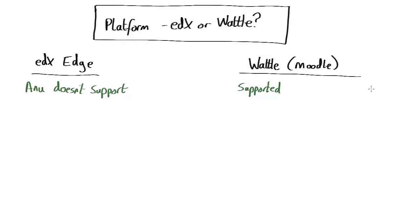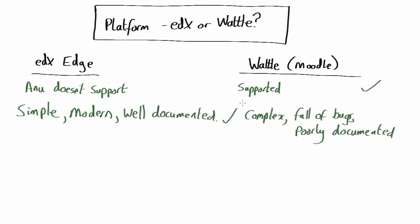So that's an advantage for Moodle. An advantage for Wattle is it's integrated with the ANU student systems. That means the students will automatically have an account. Anyone who's de-enrolled will lose their account. Their grades will all appear in one place, which makes it much easier to combine grades from various sources.